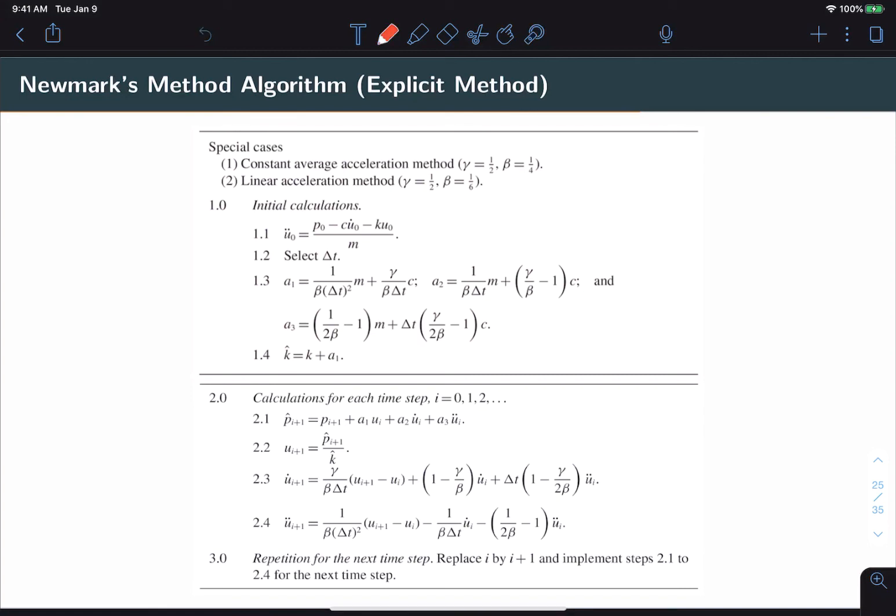This version of Newmark's algorithm is referred to as the explicit method, because we use the equation of motion to solve explicitly for ui plus one. However, this only works if that equation of motion is that of a linear system, which is what we used previously.